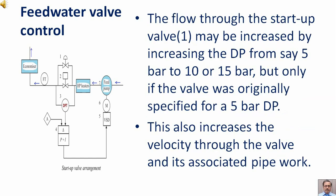The flow through the startup valve first may be increased by increasing the DP from say 5 bar to 10 or 15 bar, but only if the valve was originally specified for a 5 bar DP. This also increases the velocity through the valve and its associated pipe work.